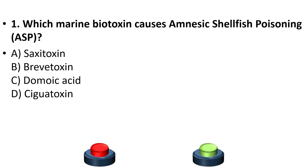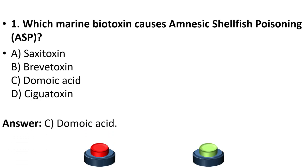First question: Which marine biotoxin causes amnesic shellfish poisoning (ASP)? Options: saxitoxin, brevitoxin, domoic acid, ciguatoxin. The answer is option C, domoic acid.